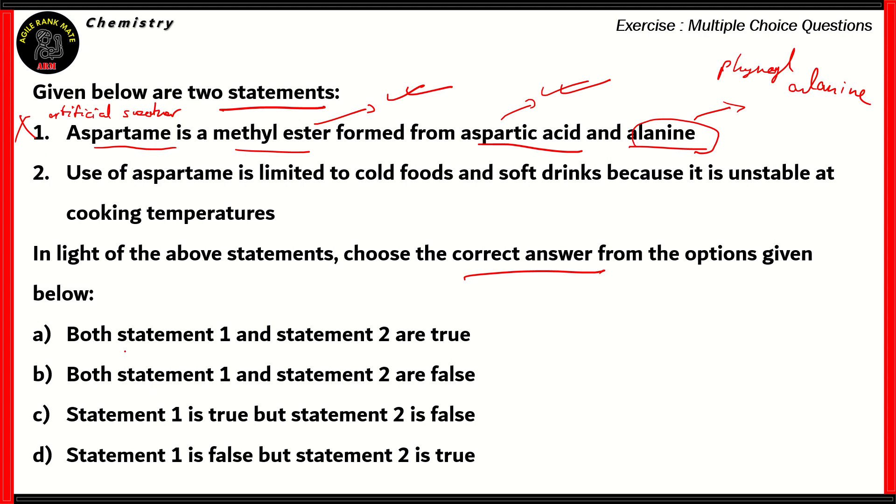Now, since statement one is incorrect, option A is incorrect, and option C is also incorrect, because both of these options say that statement one is true. Now let's look at the second statement to find the correct option.